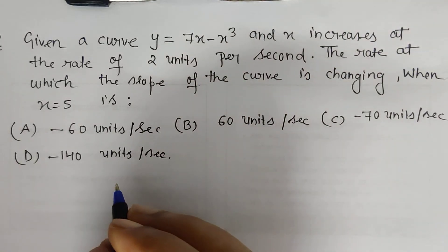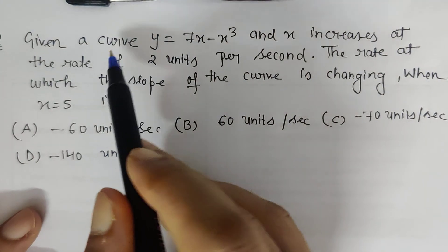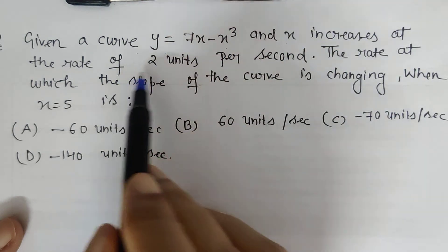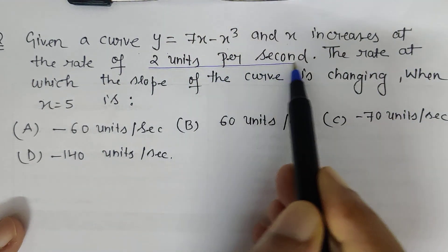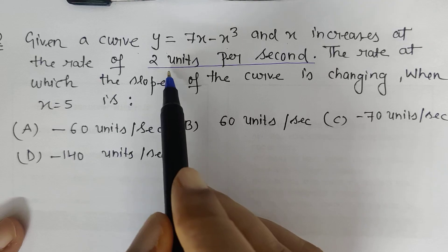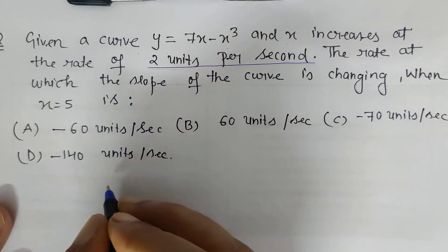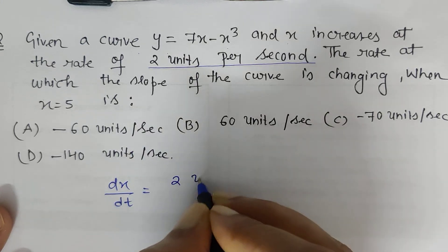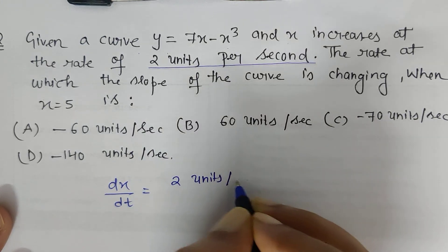Here's a problem on application of derivatives. I have been given a curve y = 7x - x³, and x increases at the rate of 2 units per second. That means I have been given the value of dx/dt, which is 2 units per second.